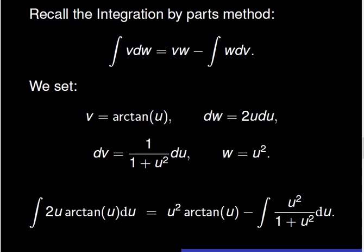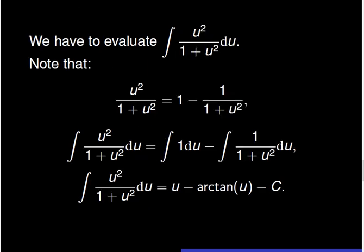Therefore, the integral of 2u times arctangent of u du is equal to u squared times arctangent of u, minus the integral of the fraction u squared over the quantity 1 plus u squared du. We see that we still have to evaluate the integral of the fraction u squared over the quantity 1 plus u squared du.